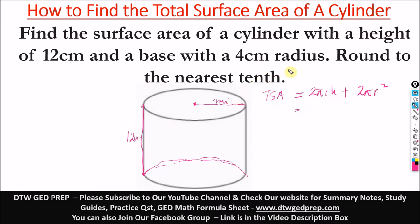And most times, the question will give us our value of pi as 3.14. But if you're not given the value of pi, just leave pi like that in the formula. So we have here 2 times 3.14 times our R which is 4, times our H which is 12. Plus 2 times 3.14 times R, that's 4 squared.